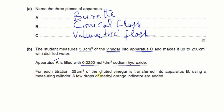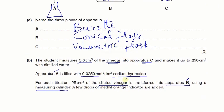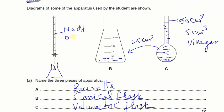Now apparatus A is filled with sodium hydroxide. So we got the burette filled with this sodium hydroxide. And for each titration 25 cm³ of diluted vinegar is transferred to apparatus B in the titration flask using the measuring cylinder. A few drops of methyl orange indicator was added. So what we have got is that we have taken 25 cm³ solution of this diluted vinegar, transferred it into the conical flask, and we have added sodium hydroxide into the burette and the concentration is 0.025 mol per dm³. This is the concentration of sodium hydroxide. And this flask contains the diluted vinegar and we have added methyl orange into it. Vinegar is an acid.